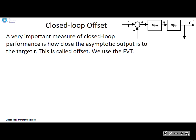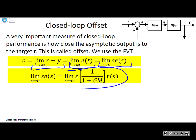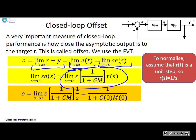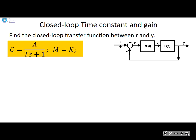Closed-loop offset: A very important measure of closed-loop performance is how close the asymptotic output is to the target r. This is called offset. We can use the final value theorem to get this. The offset is the limit as t goes to infinity of r minus y, or the limit as s goes to zero of s·E(s). Plugging in our formula for closed-loop transfer function, we end up with offset equals 1/(1 + G(0)·M(0)). In an ideal control law, you want this offset to be zero.